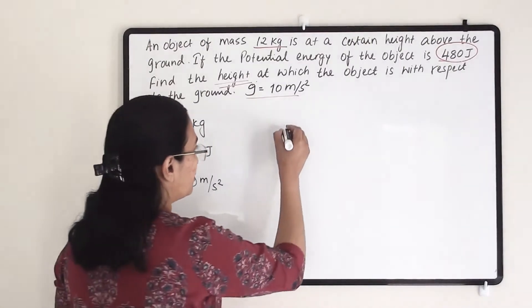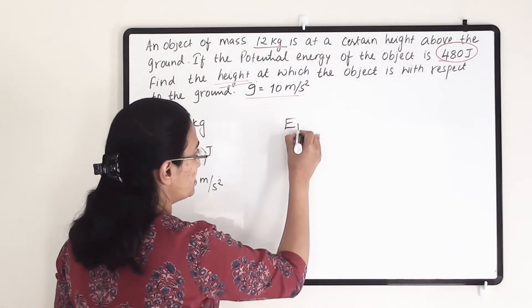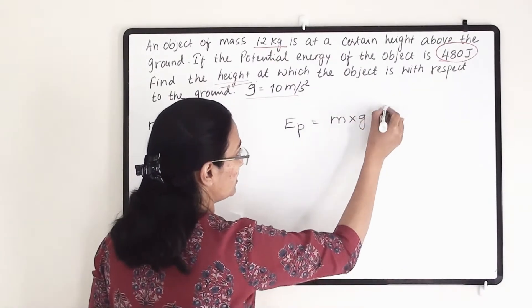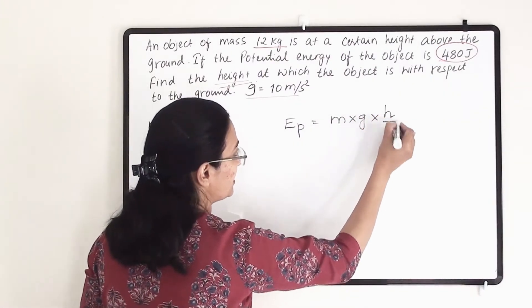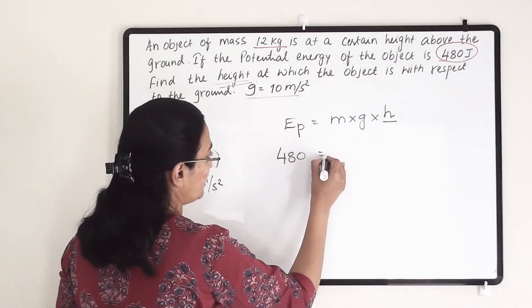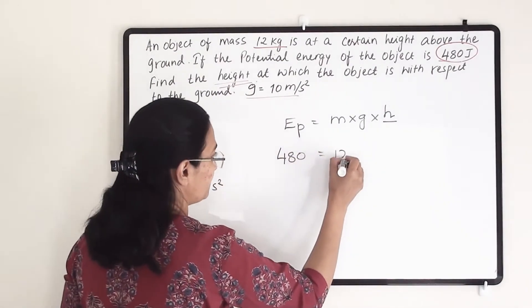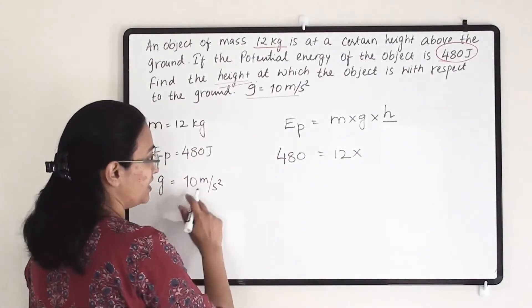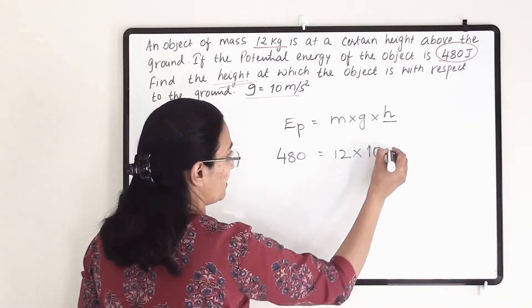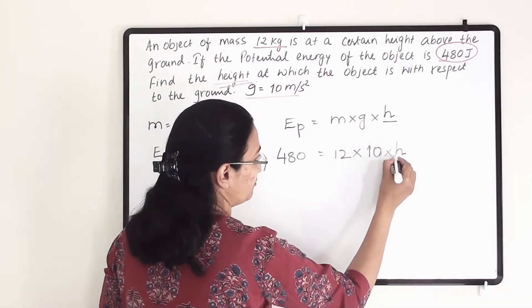Our equation for potential energy is Ep equals to M into G into H, where we need to find out H. So 480 equals to mass is 12 into G we have to take 10 into H. That we have to find out.